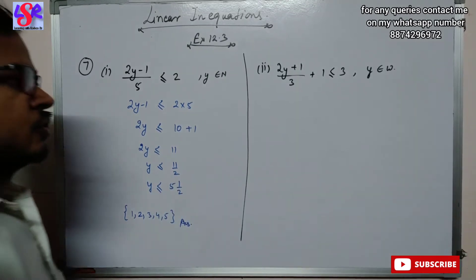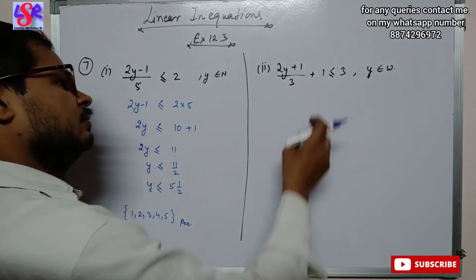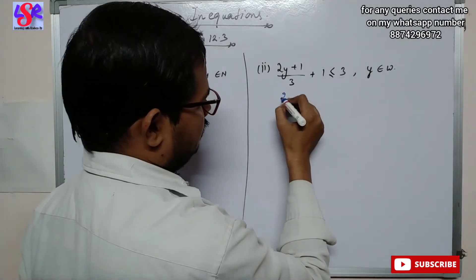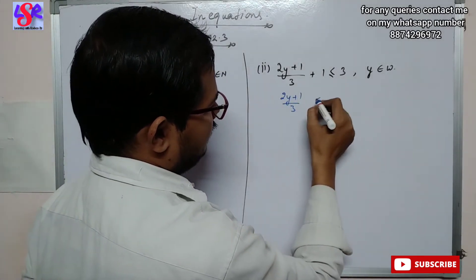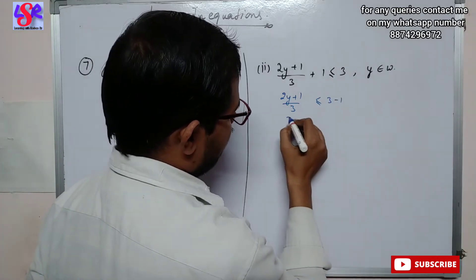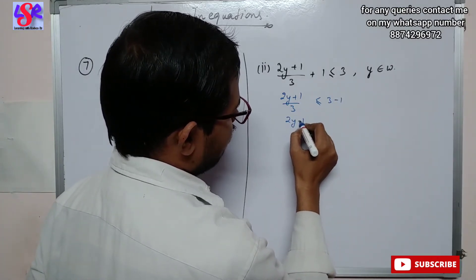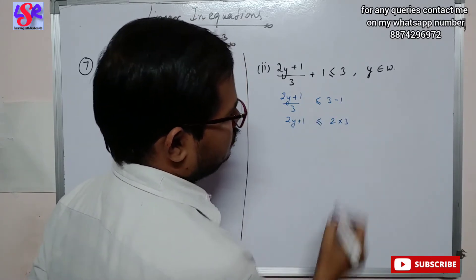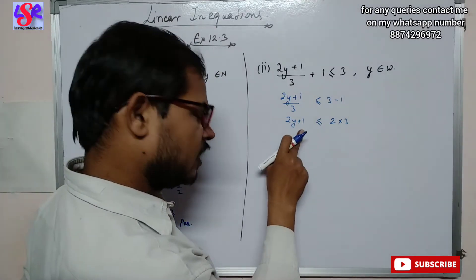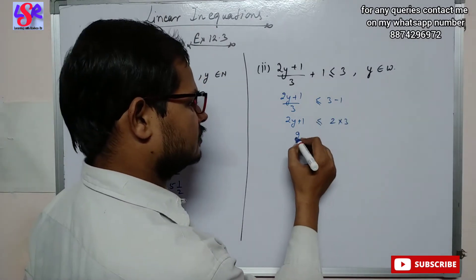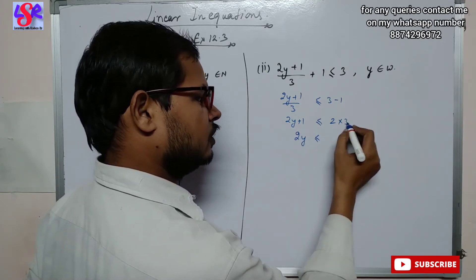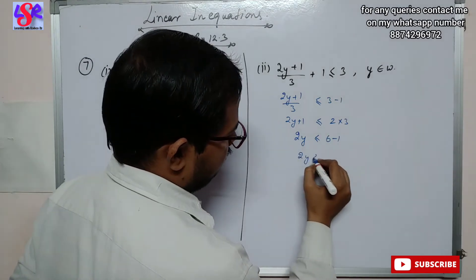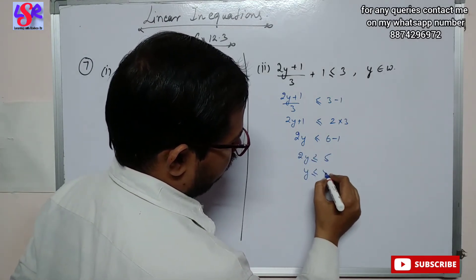Now let's do the second part of this question. Here we have (2y plus 1) upon 3 plus 1 is less than or equal to 3. Rearranging: 2y plus 1 plus 1 upon 3 is less than or equal to 3 minus 1, giving 2y plus 1 less than or equal to 2 into 3, that is 6. So 2y is less than or equal to 6 minus 1, giving 2y less than or equal to 5. So y is less than or equal to 5 by 2.